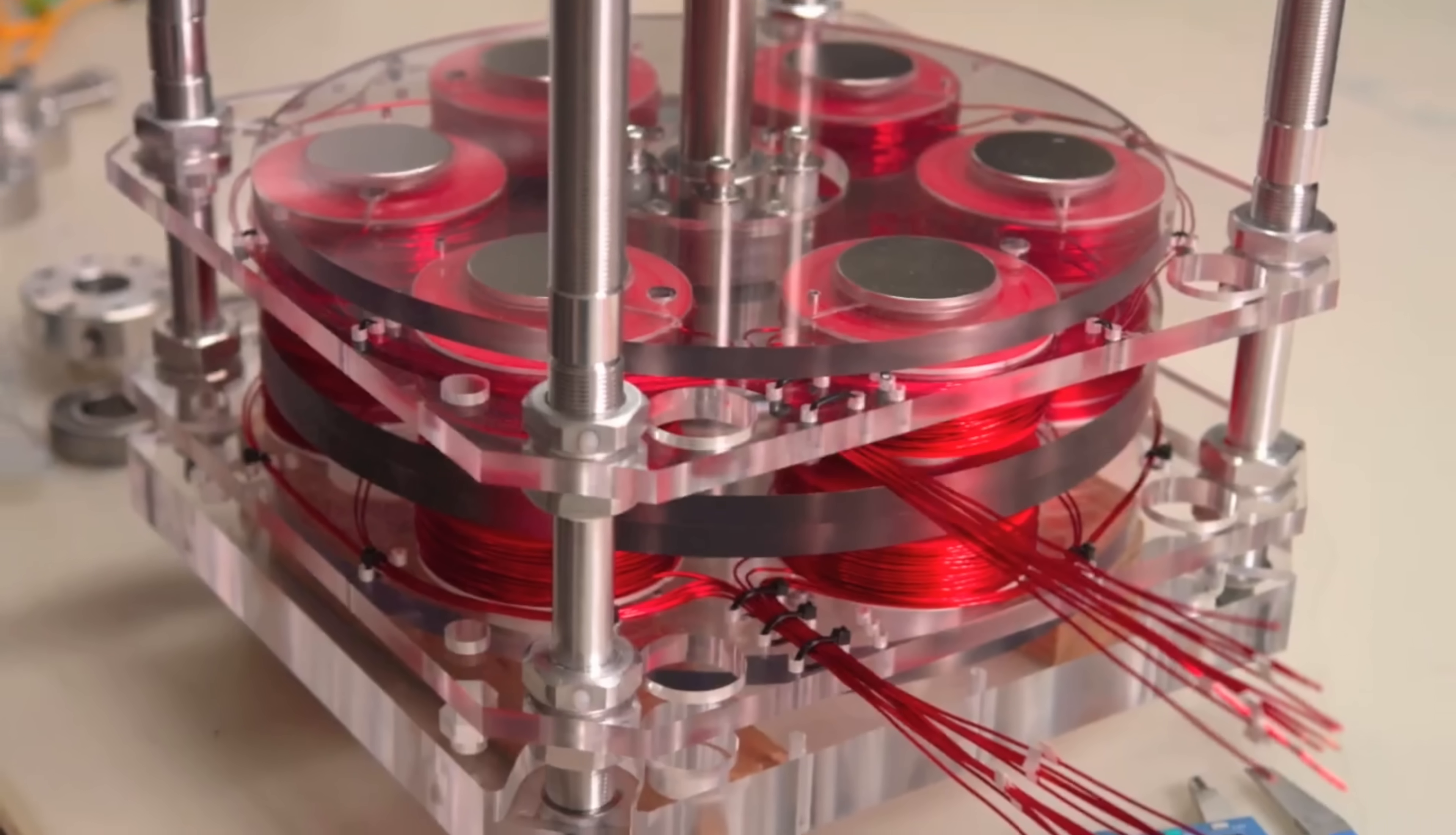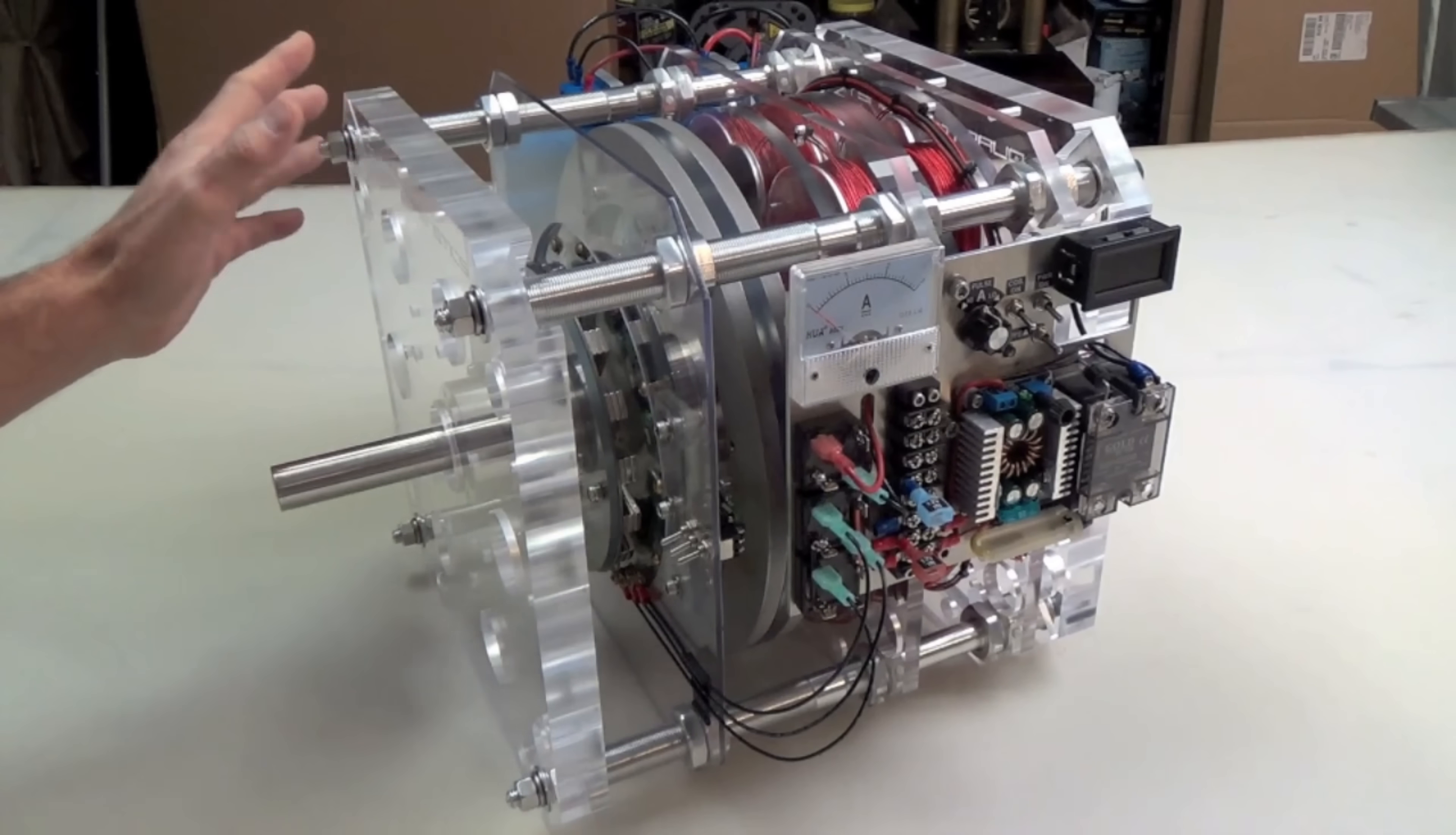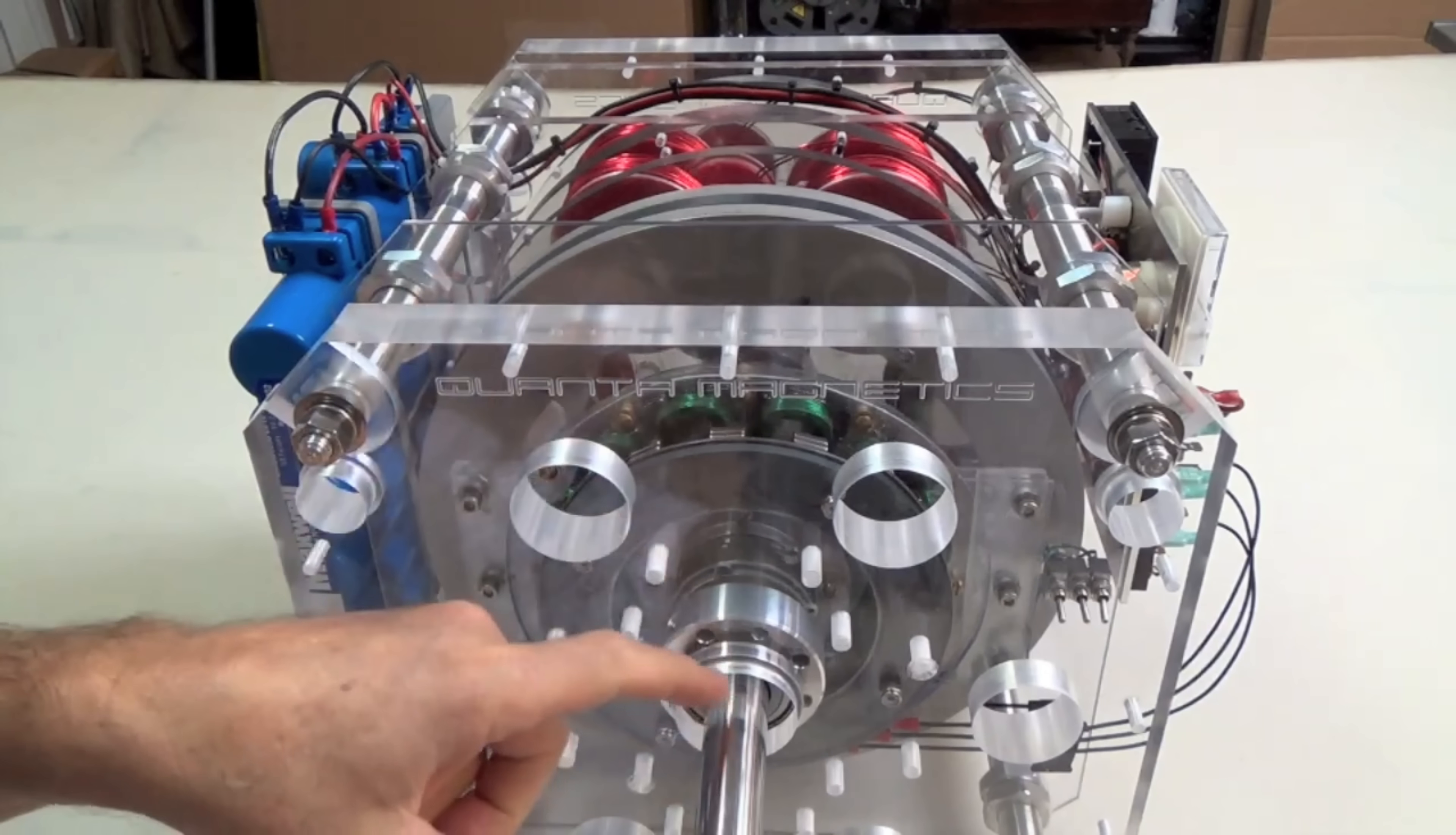At the heart of Quantum Magnetics technology was a bold claim: the ability to generate electricity from nothing more than the power of magnetism. Using a proprietary design of spinning magnets, the company said it had created a device that could produce clean, limitless energy with no need for fossil fuels, nuclear power, or any other traditional energy source. The basic premise behind Quantum Magnetics generators was simple yet revolutionary. By precisely arranging powerful permanent magnets in a specific configuration, the company's engineers claimed they could harness the natural repulsive and attractive forces of magnetism to produce a perpetual motion machine.